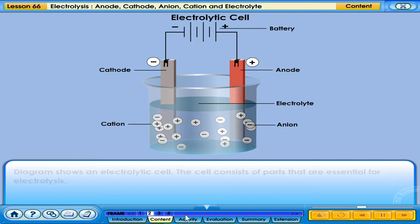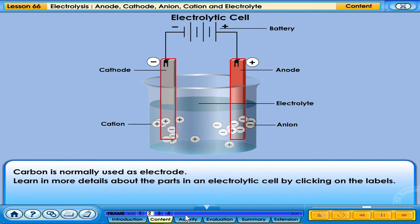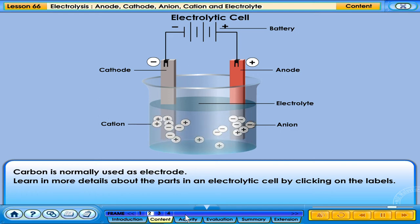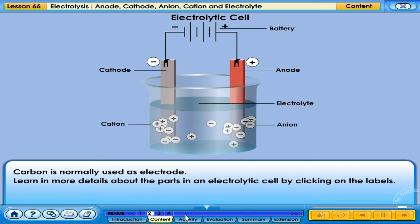Carbon is normally used as the electrode. Learn in more detail about the parts in an electrolytic cell by clicking on the labels.